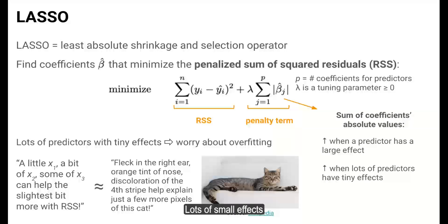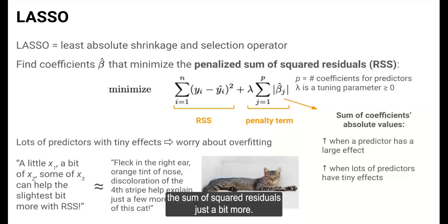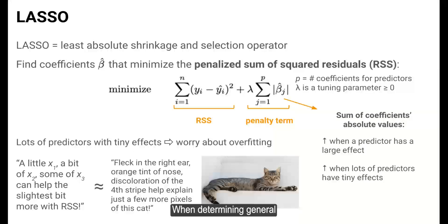Lots of small effects amounts to saying we can decrease the sum of squared residuals just a bit more if we take a little of that predictor, a little of that other one, and just a little of that other one. This sounds a lot like over-reading into specific features of a single cat image when determining general characteristics of cat pictures.